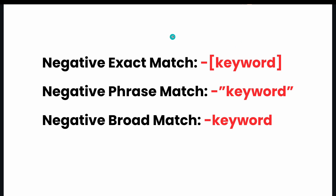Today we're going to talk about negative keyword match types, and you have three types. You've got negative exact, you've got negative phrase, and you've got negative broad. Negative exact match has brackets at the beginning and the end of your keyword. With negative phrase, you have quotation marks at the beginning and the end. And negative broad has nothing at the beginning or end — you just input your keyword with the minus sign at the beginning of it.